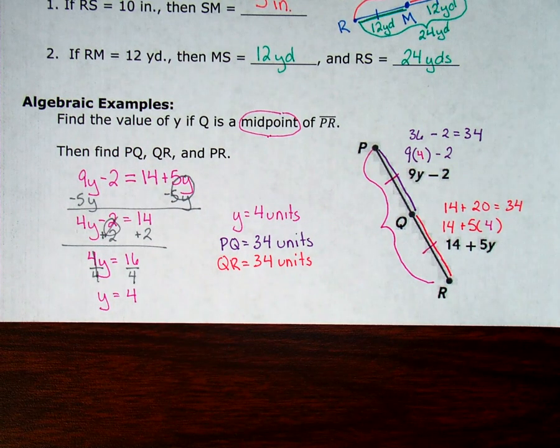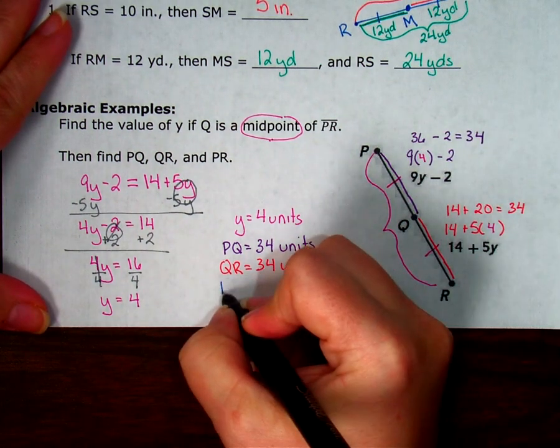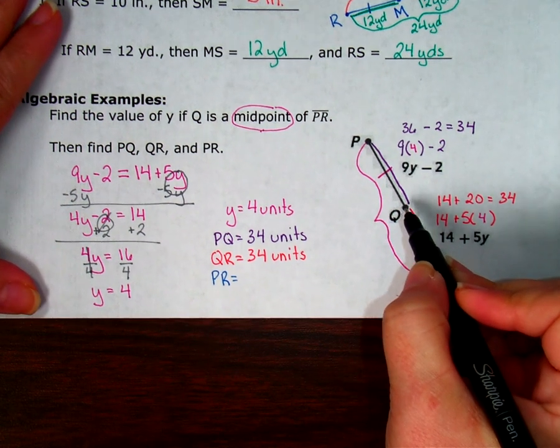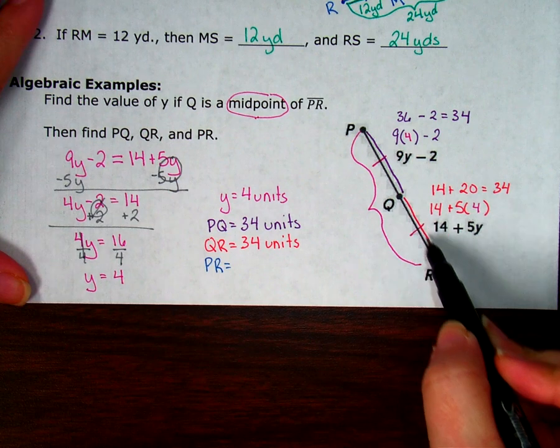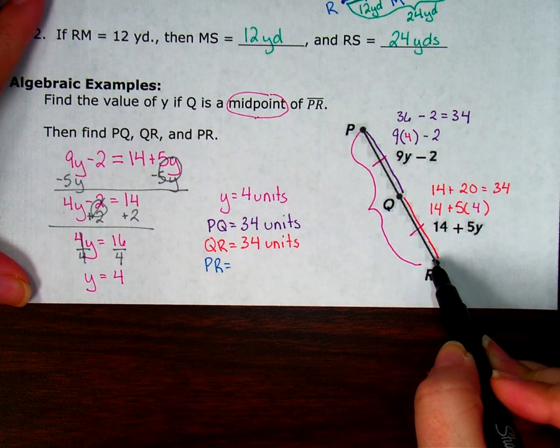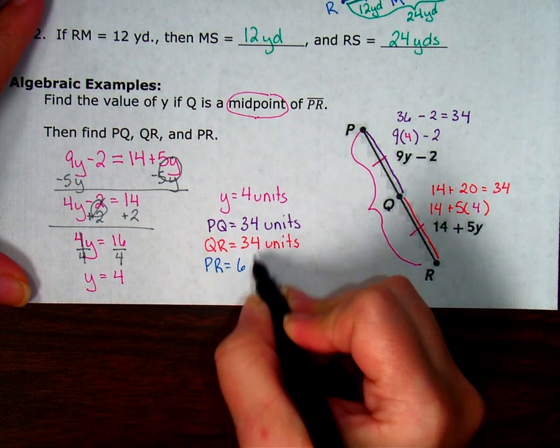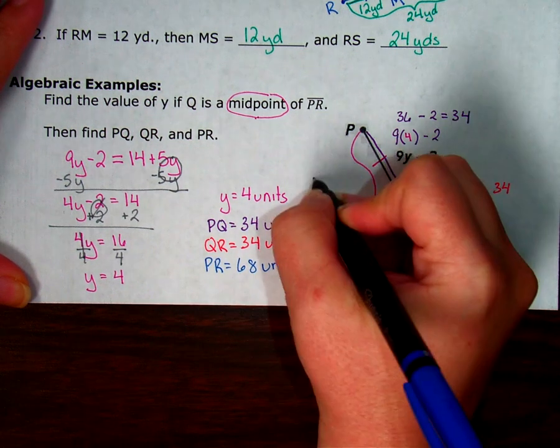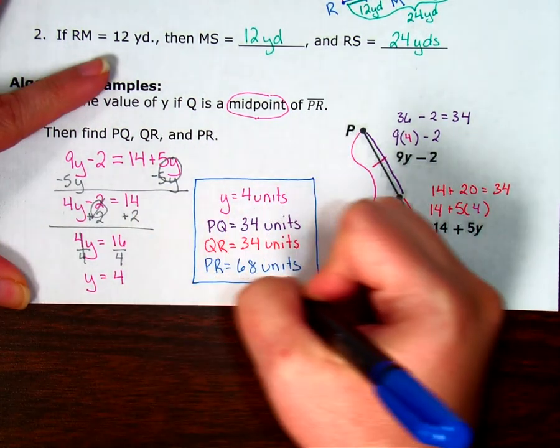So then last but not least, it wants the answer to how long is it from P to R. So from P to R, the whole thing is going to be, I have to travel, I have to use my segment addition from last week, P to Q plus Q to R. So I have to go 34 plus another 34. 34 plus 34 is 68 units. There's my four answers to this one problem.